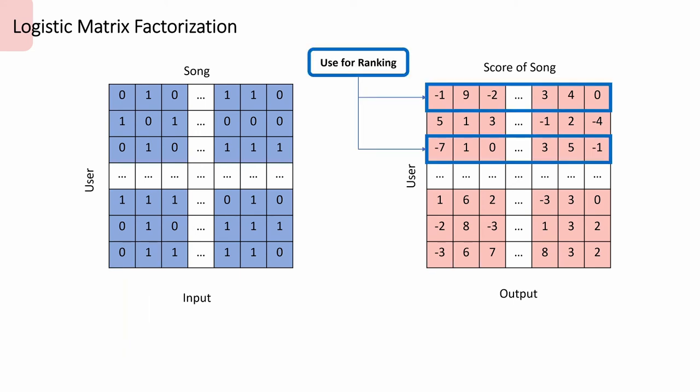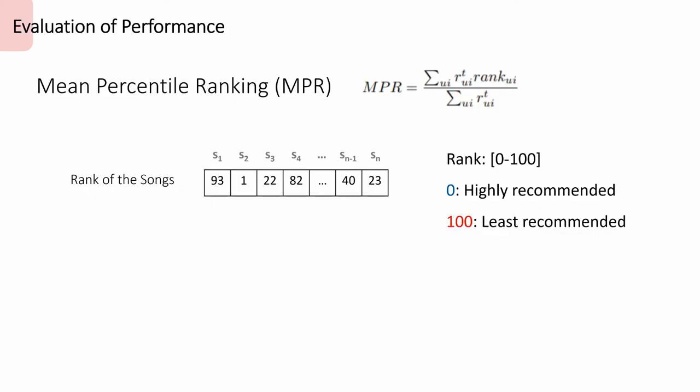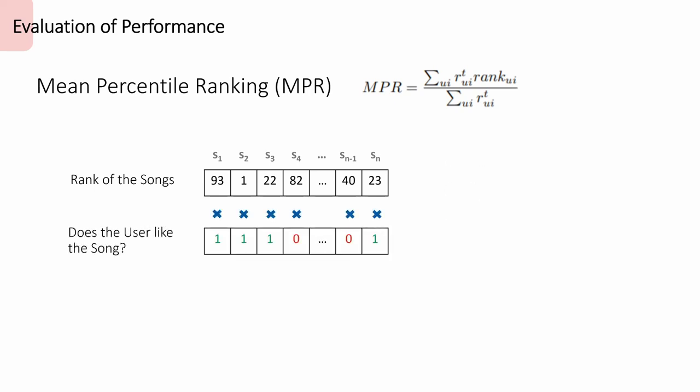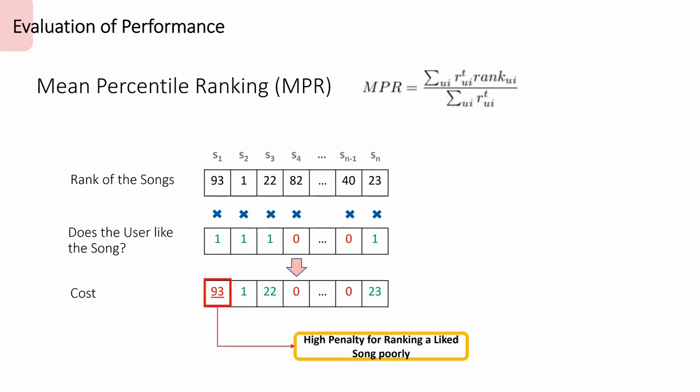We can then use the output values to rank the list of songs that a user would like. We decided to use mean percentile ranking as an evaluation metric for how well our model performed. So, for each user, given a list of recommended songs, there is a rank value which ranges from 0 to 100, with 0 being the most recommended song. We multiply this rank with a value of 0 or 1 depending on if the user likes the song. By doing this, we will heavily penalize songs that the user actually likes but were ranked poorly. Our algorithm will then choose the hypothesis with the lowest NPR cost.